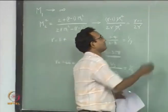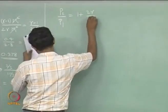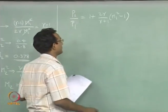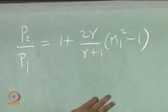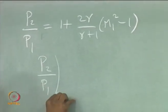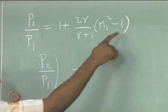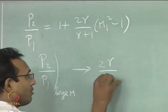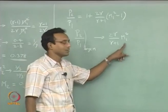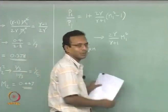Now, what happens to the pressure ratio P2/P1? We had a formula for P2/P1. If M1 is a very large number, P2/P1 tends to (2γ/(γ+1))·M1². If M1 is very high, P2/P1 is also very high — it is not independent of Mach number, it keeps increasing. So P2/P1 does not go to a constant, which is what we also saw in the plots.